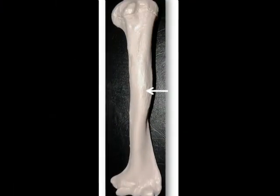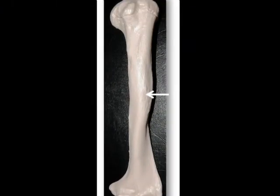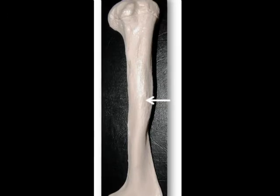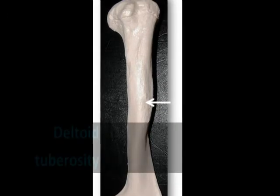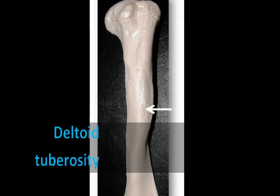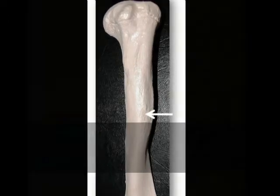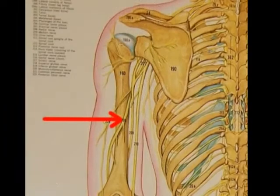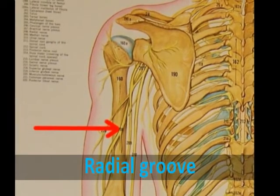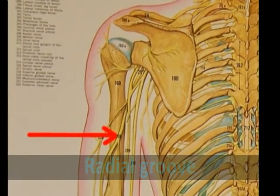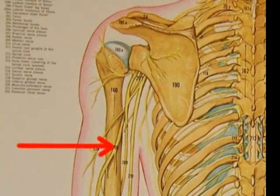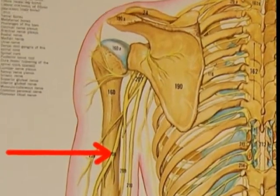Located at the middle of the shaft on its lateral side is a rough v-shaped region called the deltoid tuberosity. This is an attachment point for the tendons of the deltoid muscle. The radial groove is a depression on the posterior humerus that runs alongside the deltoid tuberosity and contains the radial nerve.